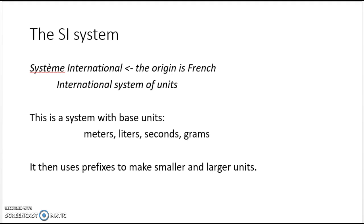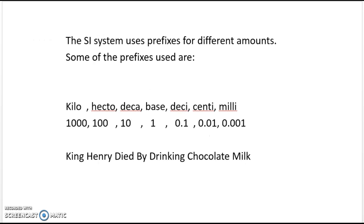The SI system uses prefixes to make smaller and larger units. These prefixes are: kilo, hecto, deca, the base — which includes grams, meters, liters, etc. — then desa, centa, and mili.